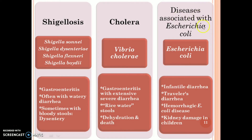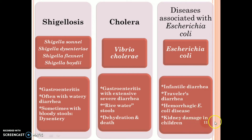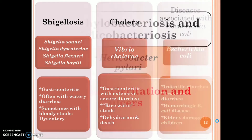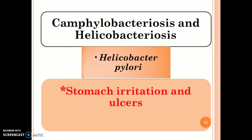Disease associated with Escherichia coli, also called infantile diarrhea and traveler's diarrhea, includes hemorrhagic E. coli disease; kidney damage in children may be observed. Campylobacteriosis and helicobacteriosis are caused by Helicobacter pylori; the major symptom is stomach irritation and ulcers.